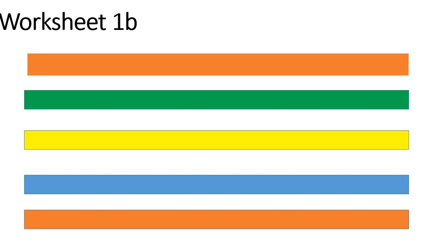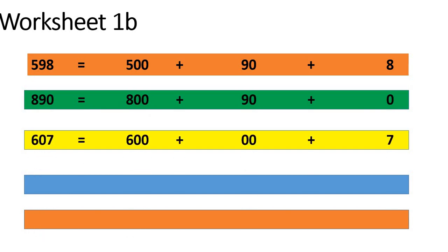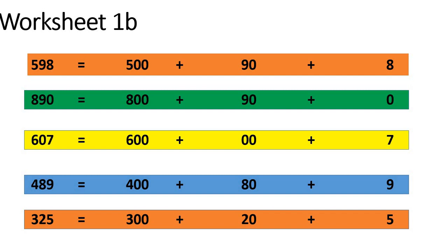Students, this is Worksheet 1B. The question is: fill in the missing blanks. You will write the expanded form. How many hundreds? 500 plus how many tens? 9 tens, so 90. How many ones? 8. So 500 + 90 + 8. Second one: 890 equals 800 + 90 + 0. Third one: 607 equals 600 + 00 + 7. Also, 489 equals 400 + 80 + 9. And 325: 300 + 20 + 5.